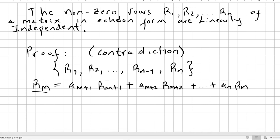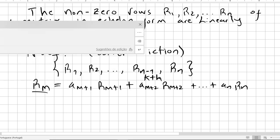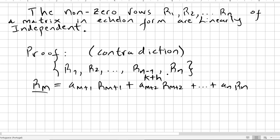Now we assume that one of the components, the Kth component, will be the first non-zero entry. Now, since the matrix is in the echelon form, these K components of Rm+1, etc., will be all zero.